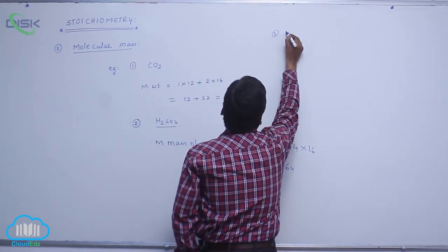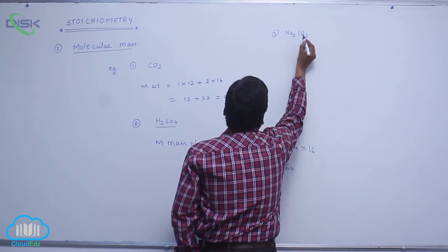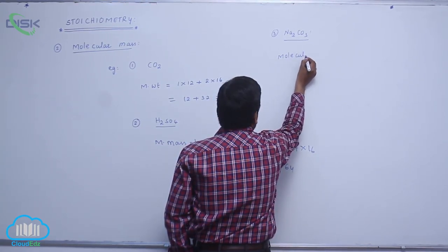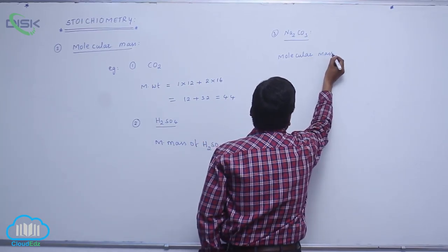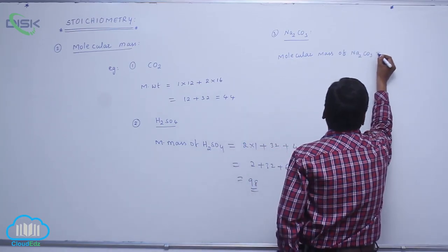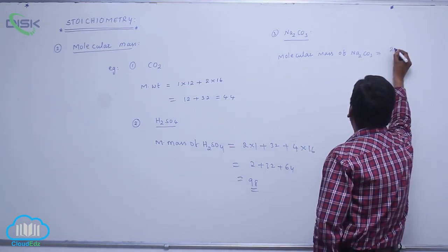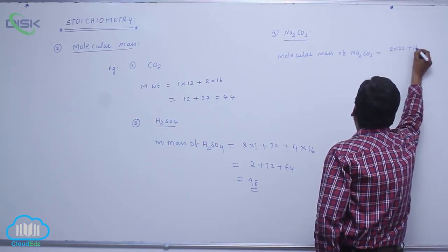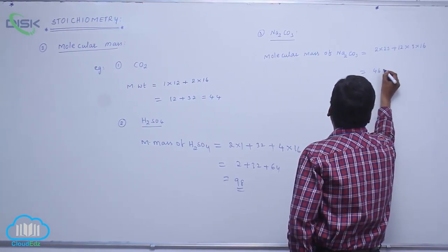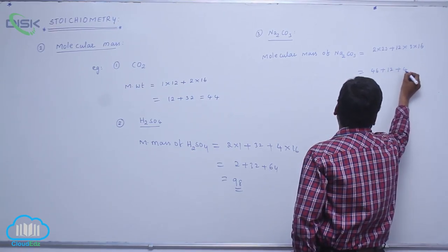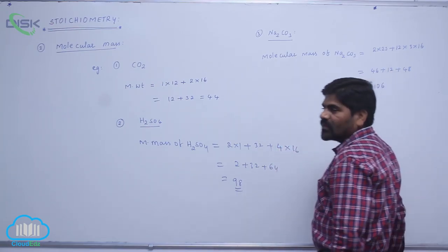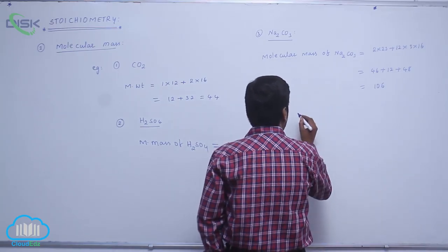Third example: sodium carbonate, Na₂CO₃. Molecular mass equals 2 × 23 (sodium) plus 12 (carbon) plus 3 × 16 (oxygen), which gives 46 + 12 + 48 = 106.